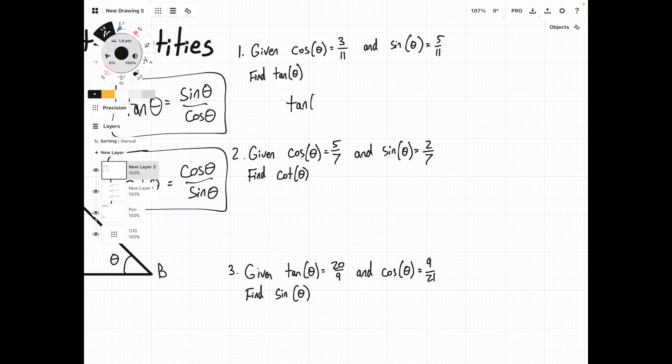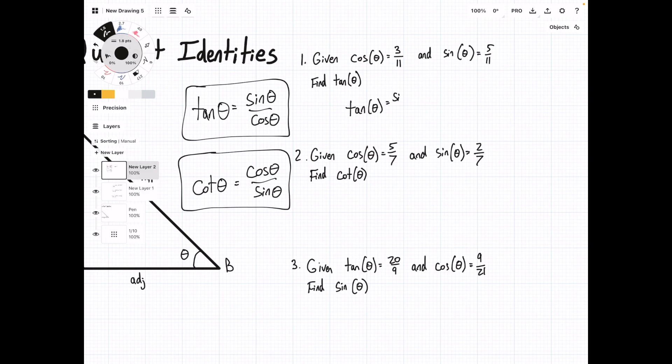Step one is write out our formula: tan θ equals sin θ over cos θ. Then we have 5/11 over 3/11. The algebra I'm doing is I pull this up and flip it, so it's 5/11 times 11/3, and then the 11s cancel. Our answer is 5/3 for tan θ.